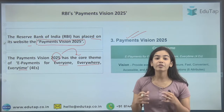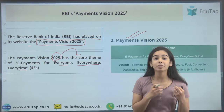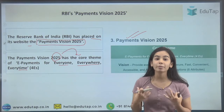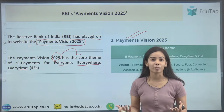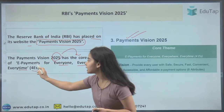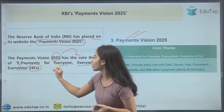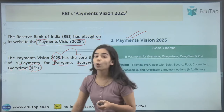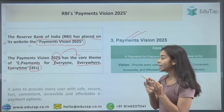The idea is that everyone in the country can access and have accessible, affordable payment options anywhere, anytime they want. So the four E's — E-Payments for everyone, everywhere, every time — is the core theme you need to remember.